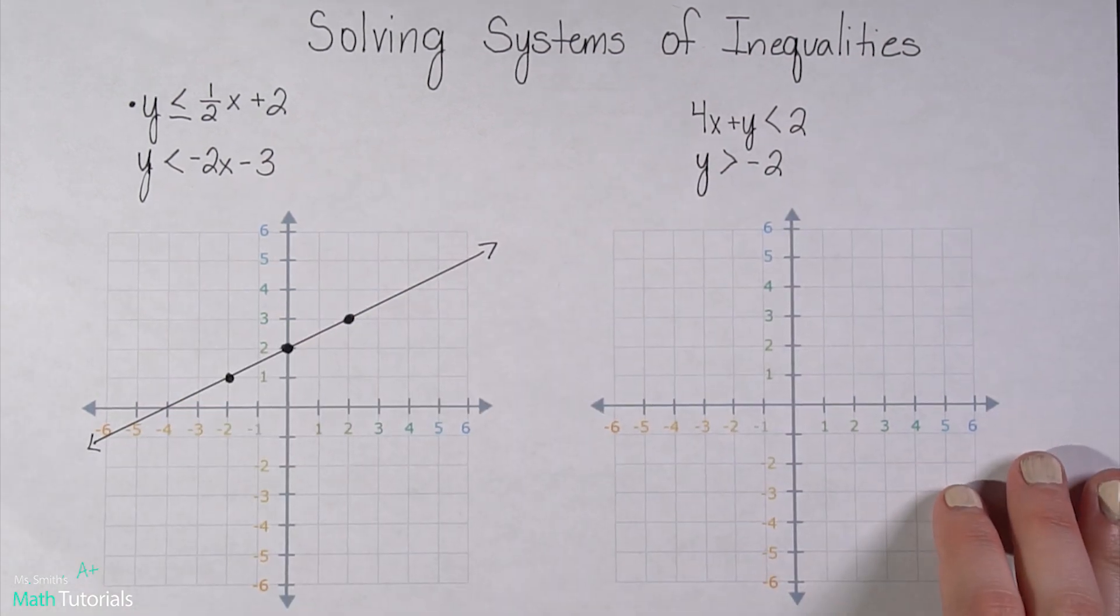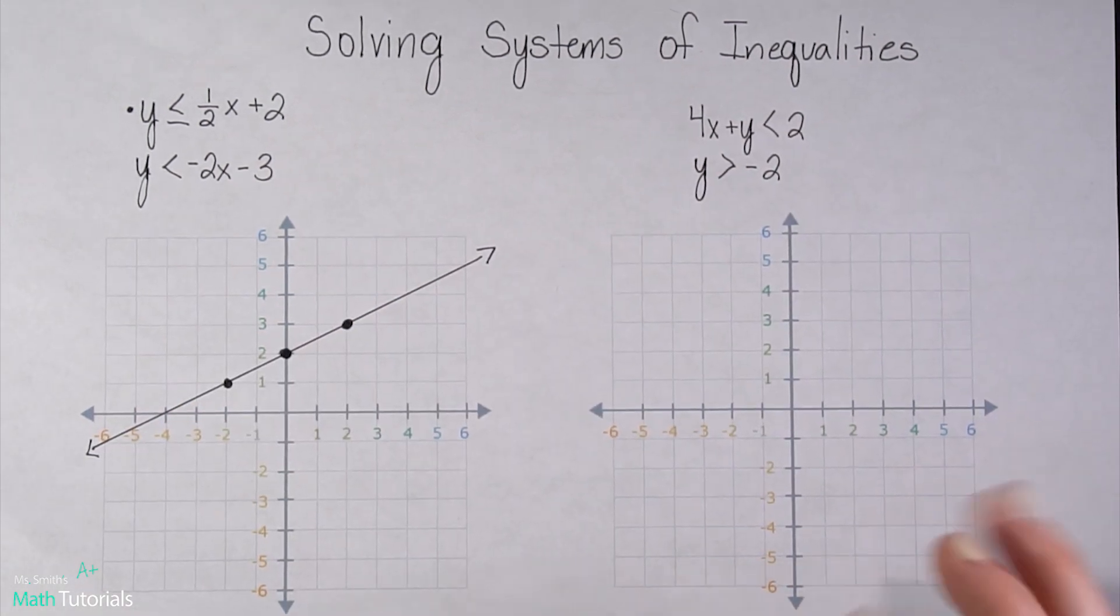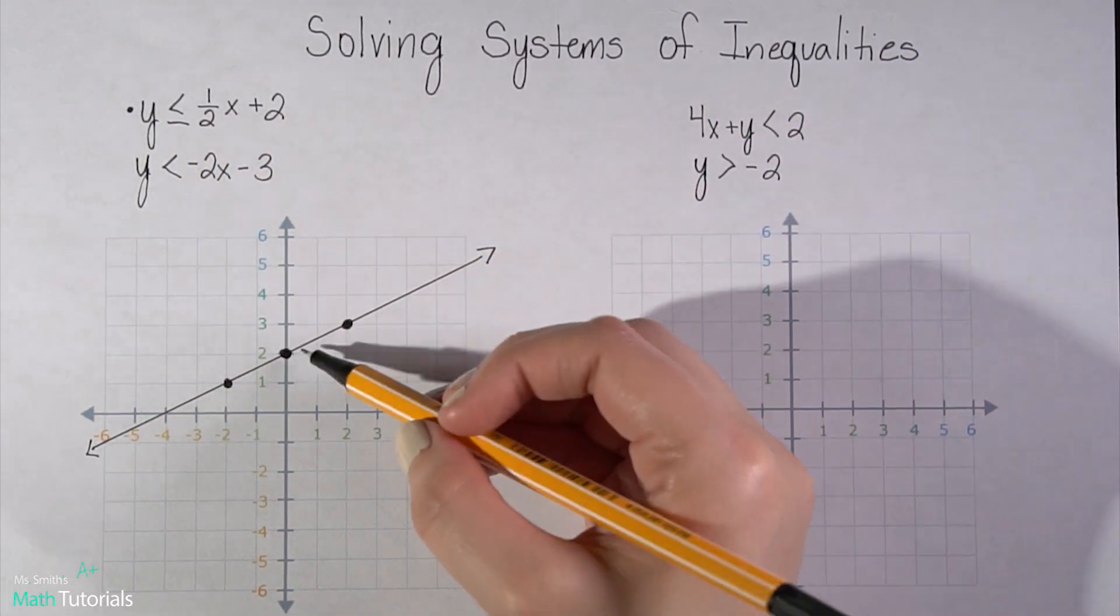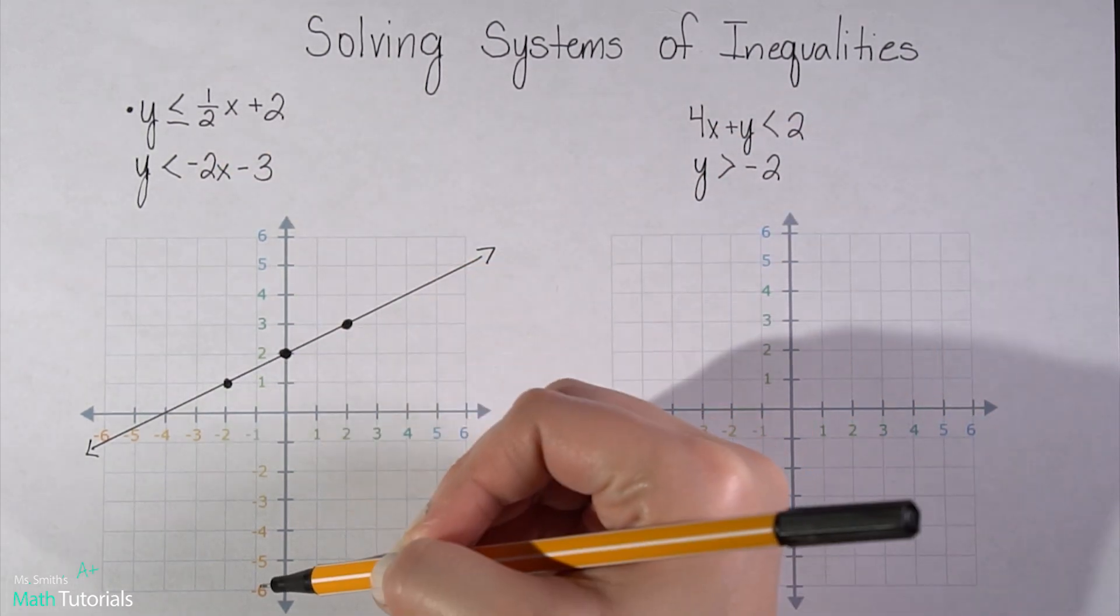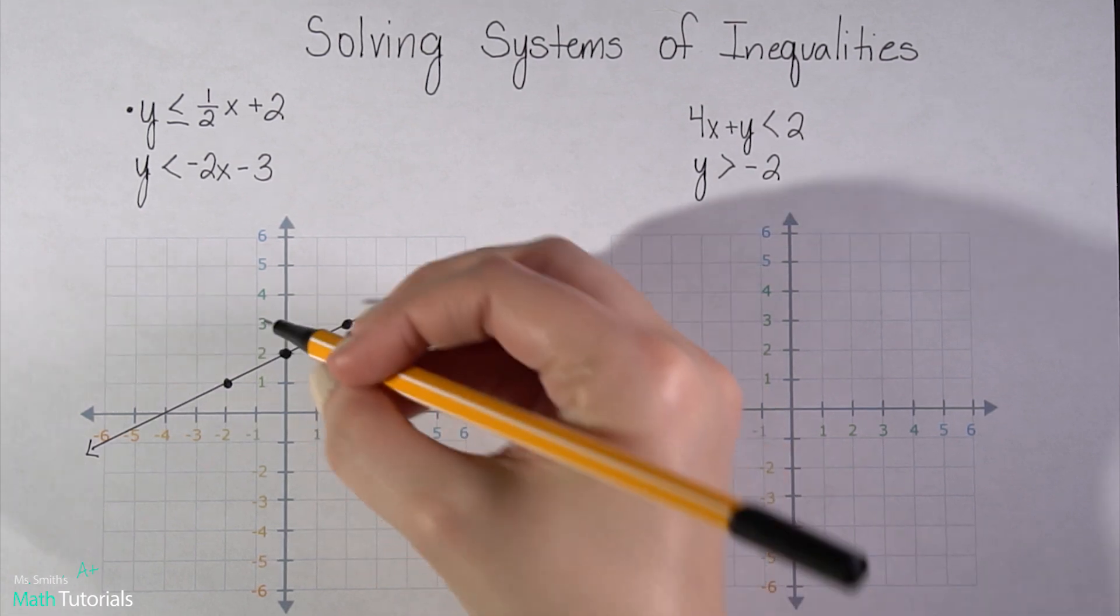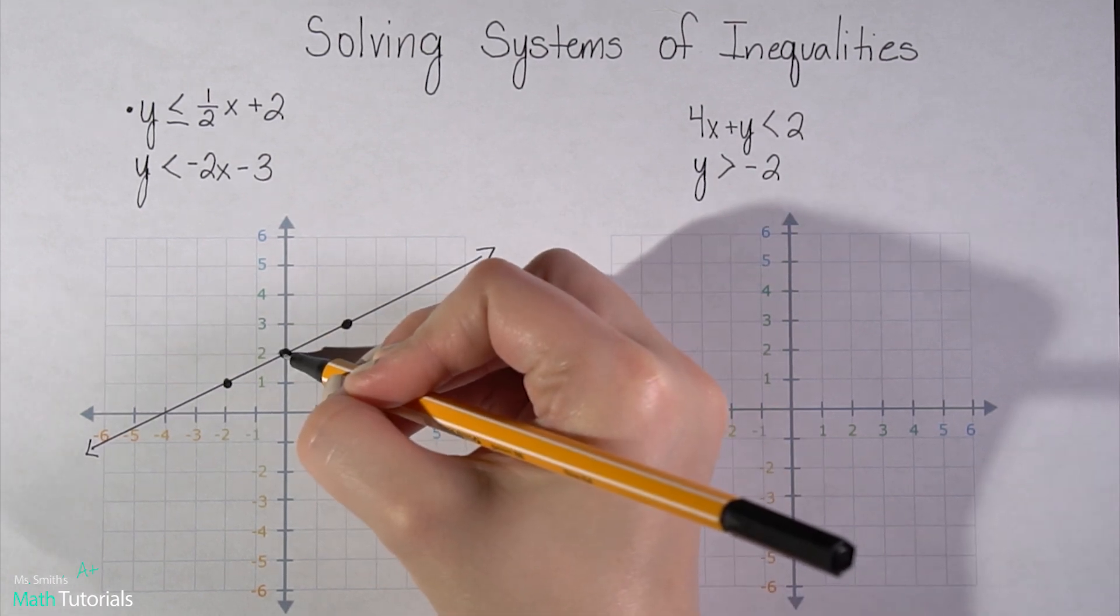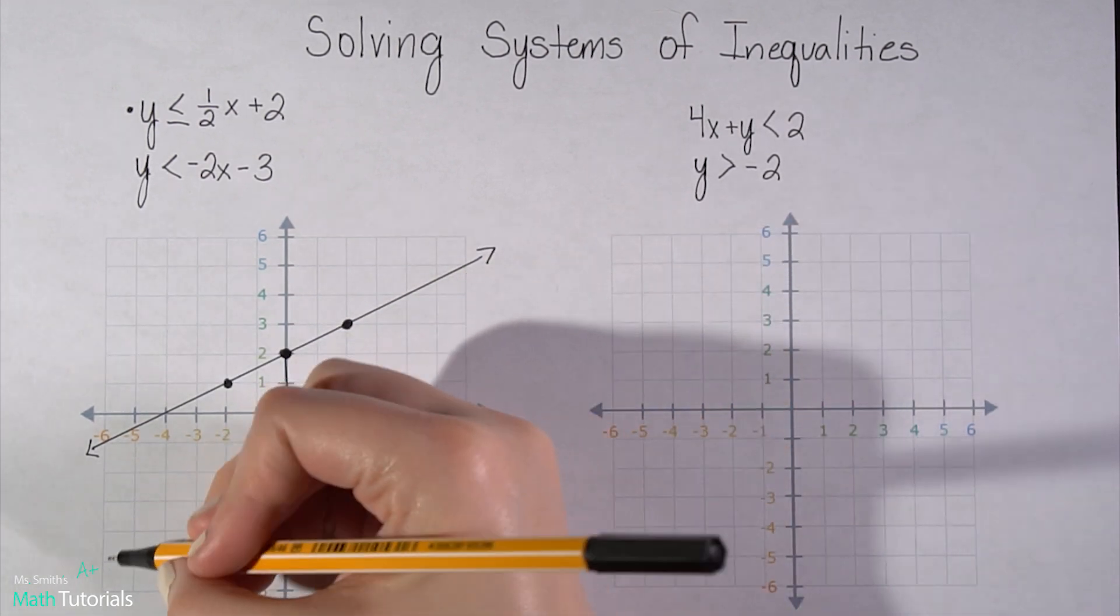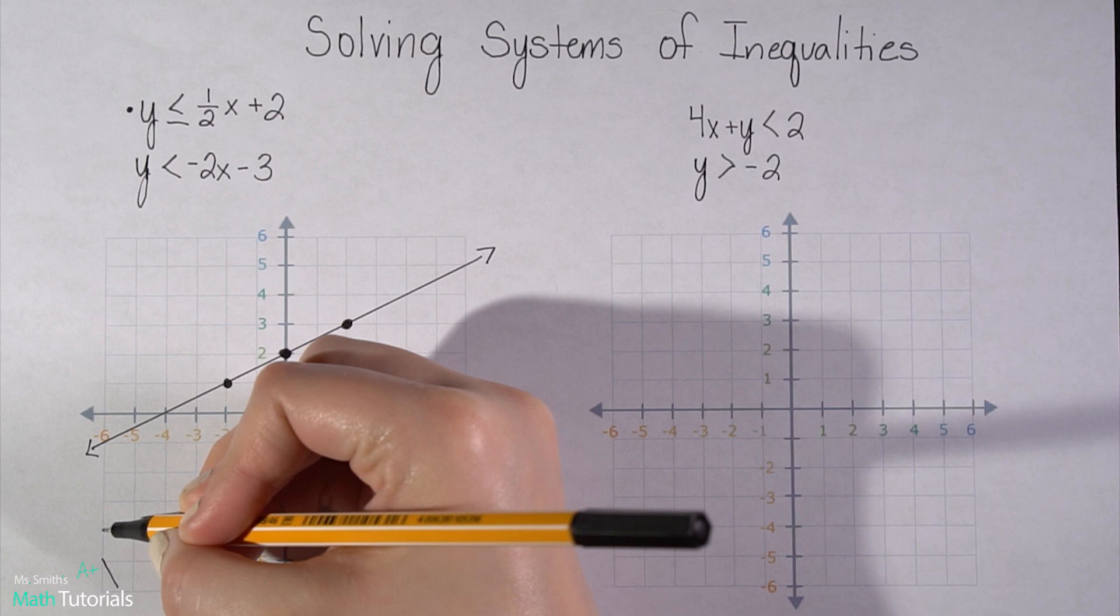And because it is a less than, that means I'm going to be shading everything below the line. So if it's ever tricky for you to think, okay, what's below and what's above, just put your pen on a dot and then pull down. That whole area is what you're going to shade. So I'm going to shade in black.